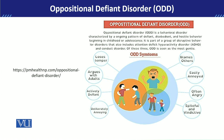इस disorder की symptoms को हम तीन ways में categorize कर सकते हैं: number one — negative affect, number two — defiant behavior, और number three — hostile behavior। जब हम negative affect की बात करते हैं तो इसका मतलब है कि उसका anger बहुत ज़्यादा reflect हो रहा है, irritability बहुत ज़्यादा होती है, और ऐसे बच्चे temper tantrum बहुत ज़्यादा show करते हैं।